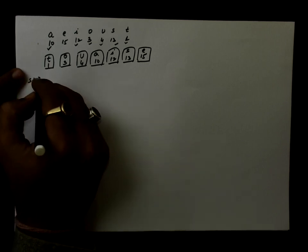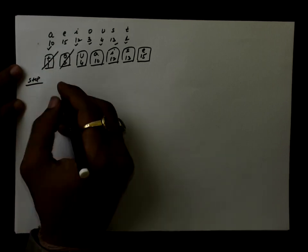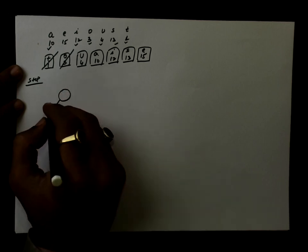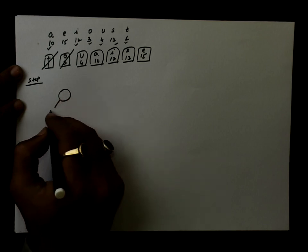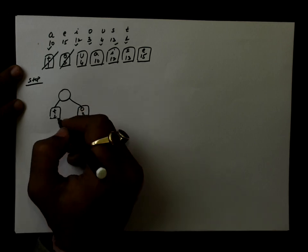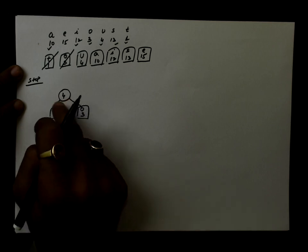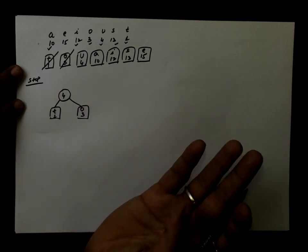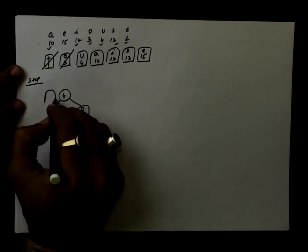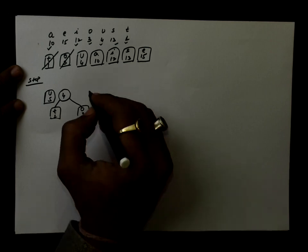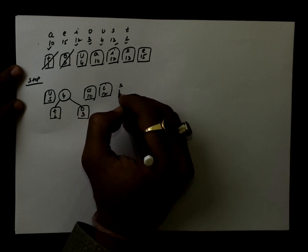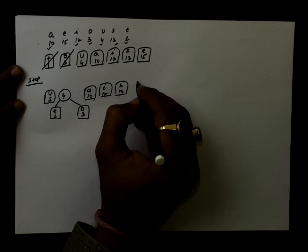In the first step, you will delete the two front values and create a new node. The left side is set as T with 1 and the right side is set as O with 3. 1 plus 3 equals 4, which is the data value of this node. This node is then inserted back in the priority queue after U, since 4 is already there. Then A with 10, I with 12, S with 13, and E with 15 follow.